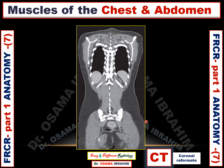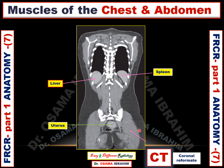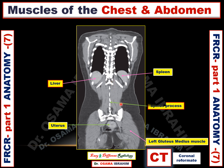This image is the coronal CT examination. This arrow refers to internal abdominal structures — on the left the spleen and on the right the liver — since this presentation is mainly about the muscles of the chest and abdomen. These arrows refer to the uterus, and that arrow refers to the left gluteus medius muscle in the pelvic region posteriorly. These arrows also refer to the spinous processes of the lumbar vertebral bodies, and these posterior muscles are a group I will talk about in detail at the end of the presentation.